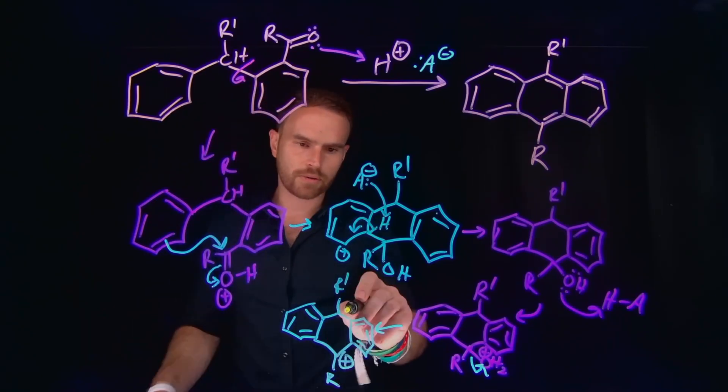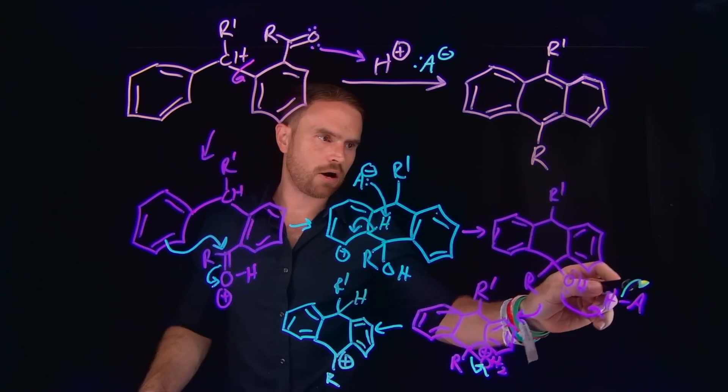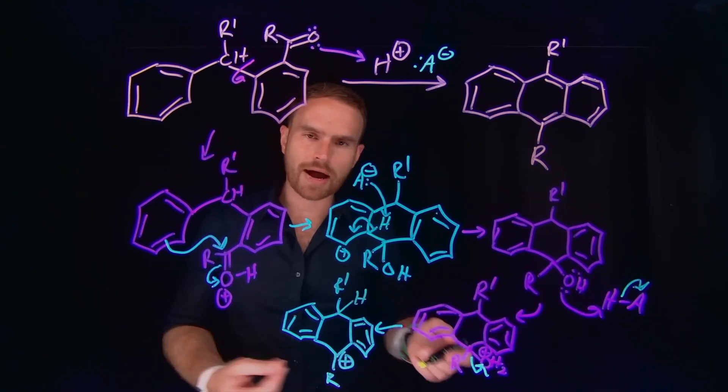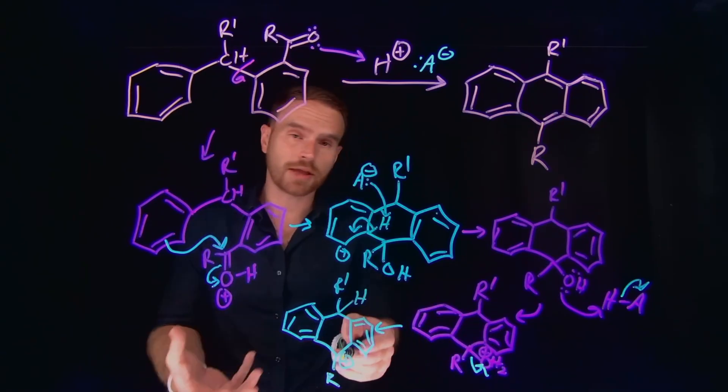But importantly, remember, there is still a hydrogen here. We generated our conjugate base in this step where we protonated our alcohol, which turned it into a better leaving group, which just left to form a stabilized carbocation.